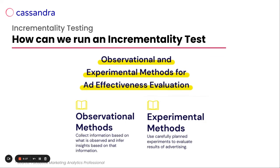To run incrementality testing, we can use two different types of methods. First, observational methods, where we don't run an experiment — we just observe and analyze behavior after launching a new product. This applies when you cannot split your audience into different groups, such as for a TV or radio campaign where you can't randomly or geographically segment your audience. Second, experimental methods — the most expensive but most accurate way to understand and analyze your marketing effectiveness.